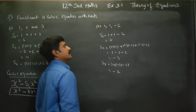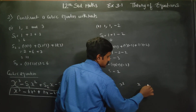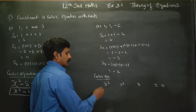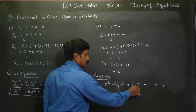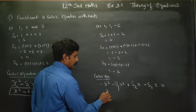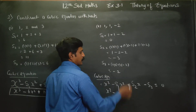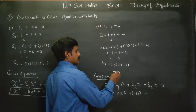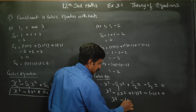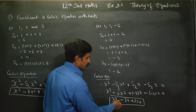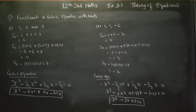s3 is three roots taken at a time: 1 into 1 into minus 2 = minus 2. The cubic equation follows the formula x cube minus s1 x square plus s2 x minus s3 = 0. Substituting: s1 = 0, s2 = minus 3, s3 = minus 2. So: x cube minus 0 x square plus (minus 3)x minus (minus 2) = 0, giving x cube minus 3x plus 2 = 0. Thank you.